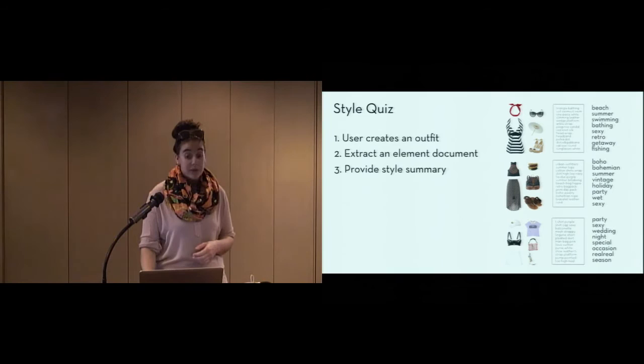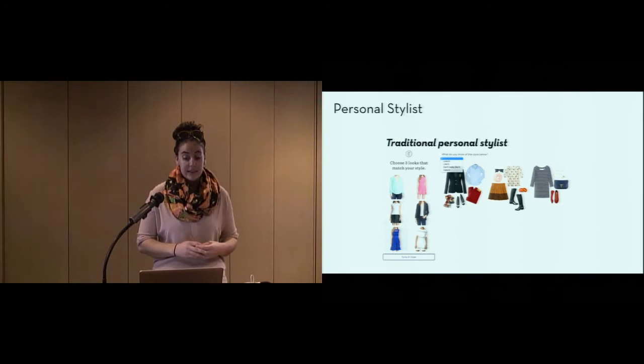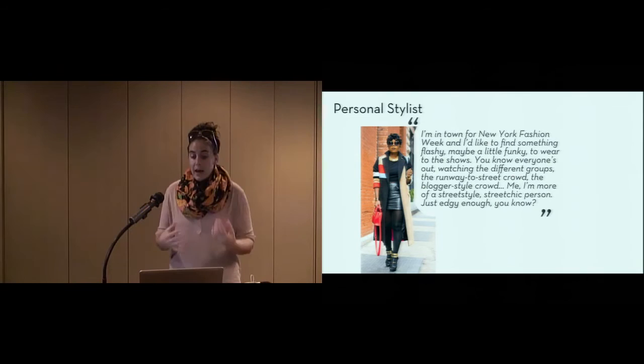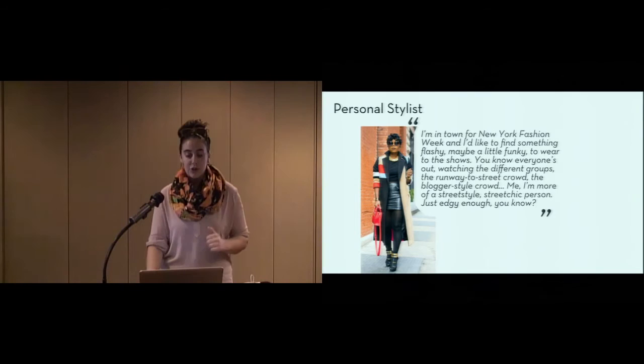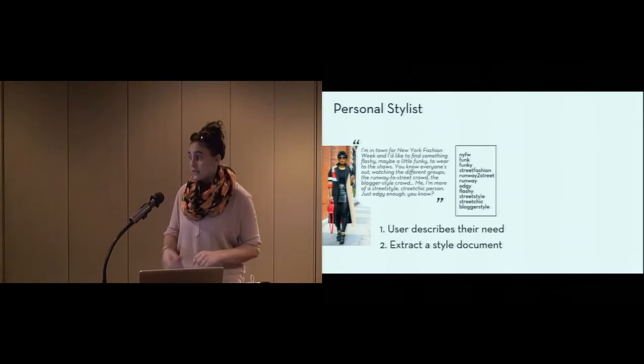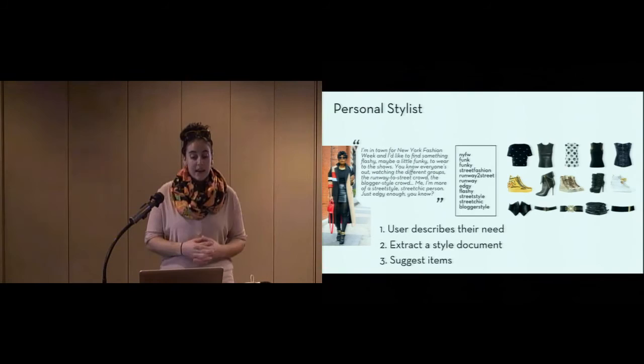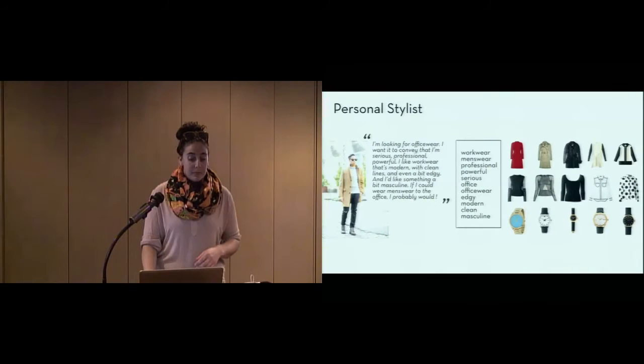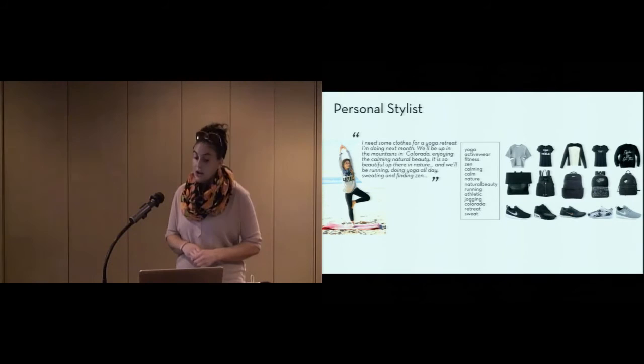Finally, we build an automated personal stylist so that personal style advice can be created at scale. In this application, a user simply describes in natural language what they want an outfit for. For example, I'm in town for New York Fashion Week and I'd like to find something flashy, maybe a little funky, to wear to the shows. We extract the style words from their free description to create a style document and, as before, translate through topic space to elements. And we can then suggest items that are described by those elements. This application can provide recommendations for New York Fashion Week, for going to a beach wedding, for modern masculine office wear, or even for a yoga retreat in Colorado. All with guidance given in users' own natural descriptions.